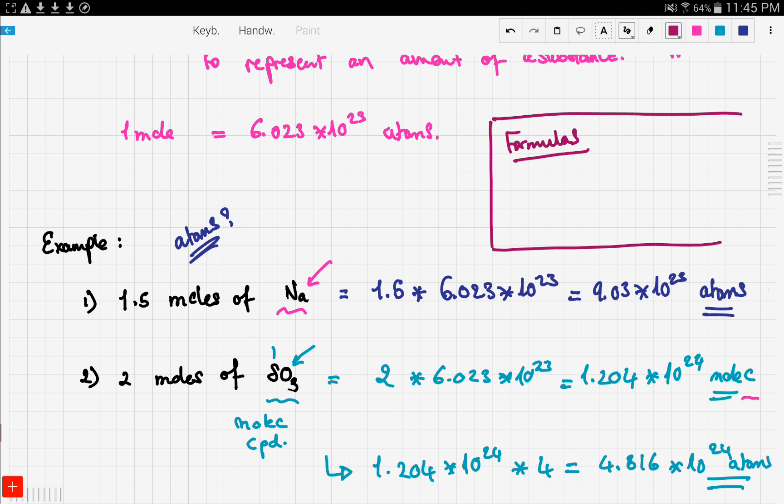In order to calculate atoms from an element we multiply the number of moles times Avogadro's number. If we want to find the molecules in a compound we multiply the number of moles times Avogadro's number also. But what if we want to find the number of atoms in a molecular compound? Well we multiply that by the number of atoms in the compound.